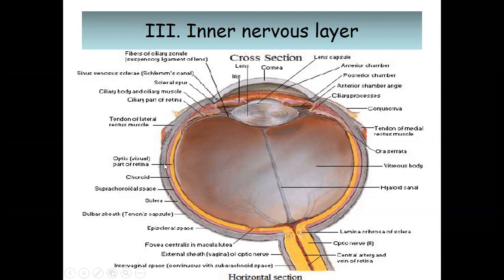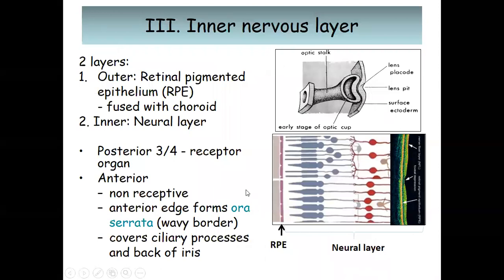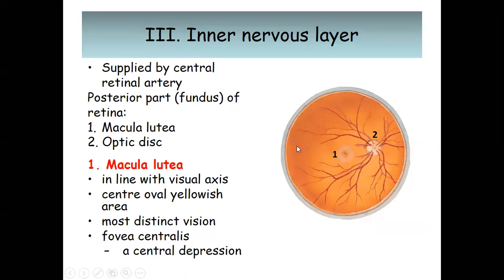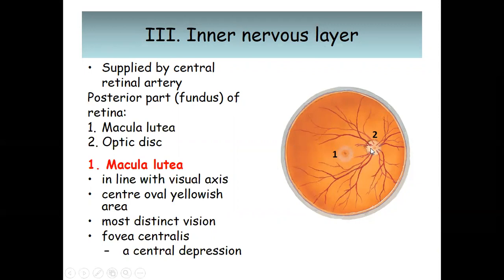The anterior part of the retina is non-receptive, while the posterior visual part is receptive and forms the image. The inner nervous layer is supplied by the central retinal artery, which emerges and gives several branches supplying the posterior part of the retina, known as the fundus.